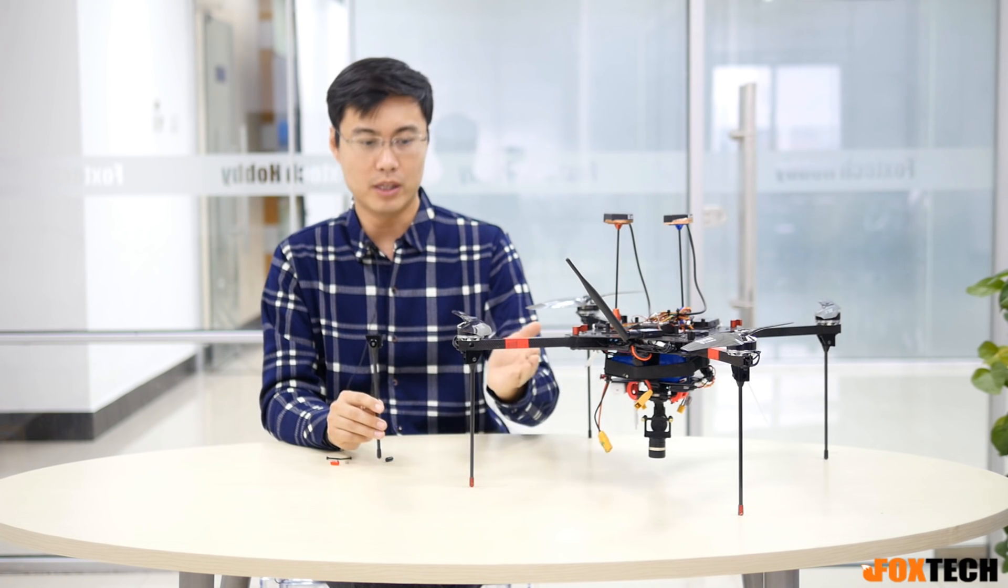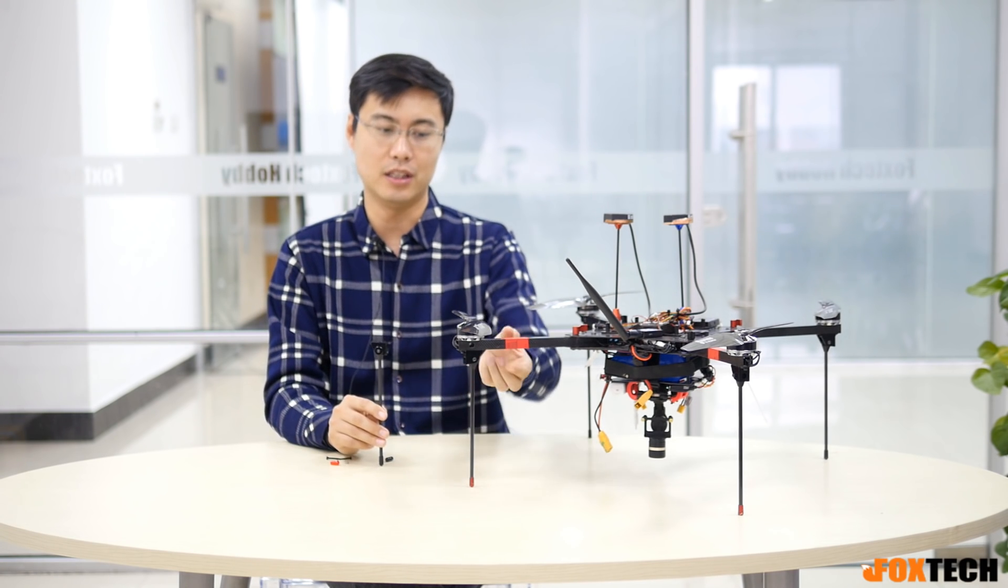This is a basic introduction about our new product, the easy landing gear designed for the Hover One and also for other DIY multicopters which has the square tube. Okay, anyway, I hope you like this one.